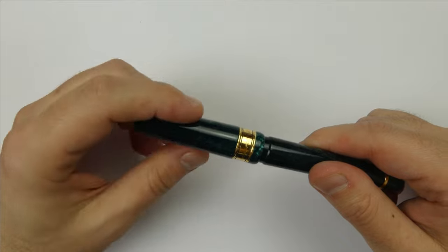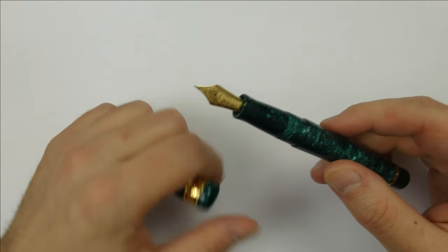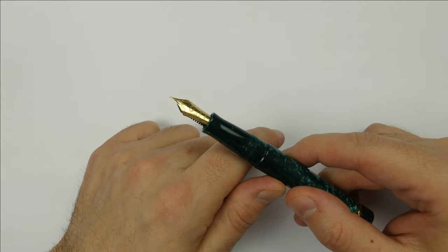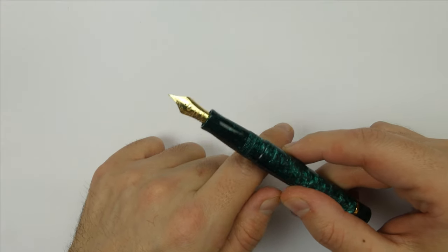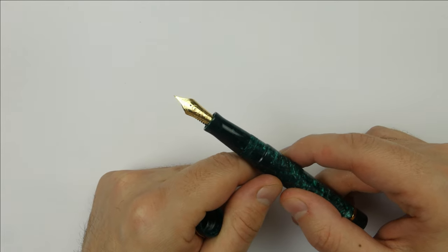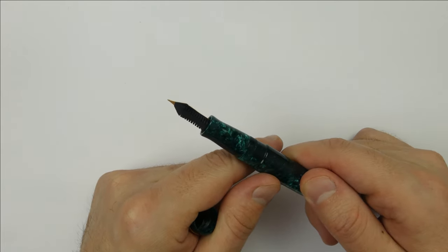Then there is the crown jewel, the nib. This is the super flexy 18k gold extra fine nib. Not only is it beautiful, but the softness and particularly the snapback of this nib is spectacular.